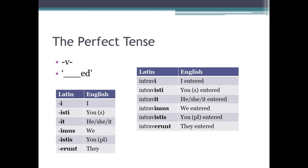Now that we've looked at the imperfect, let's have a look at the perfect tense. Verbs in the perfect tense usually have 'V' in them and are often translated by words ending in '-ed.' They represent a single or complete action that has happened in the past. Let's have a look at the example of the verb 'to enter.' Intravi means 'I entered.' Intravisti means 'you singular entered.' Intravit means 'he, she, or it entered.' Intravimus means 'we entered.' Intravistis means 'you plural entered.' And intraverunt means 'they entered.'